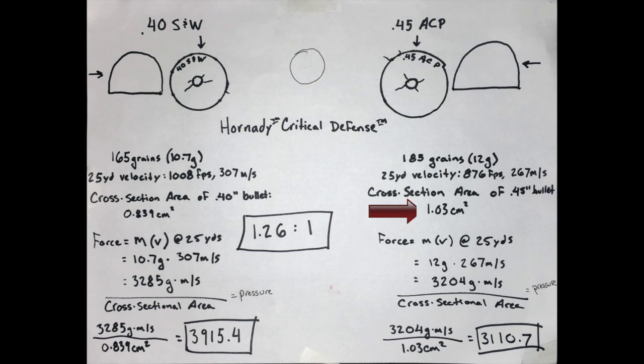Why do those areas matter? Because force is mass times velocity, but pressure is force divided by area. I wanted to see which bullet exerted higher pressure on target, or higher impact force—which bullet had more stopping power.